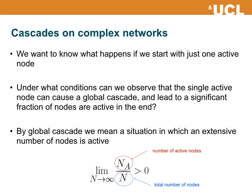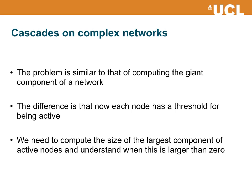By global cascade we mean a situation in which an extensive number of nodes becomes active in the thermodynamic limit. So when we consider the limit of large networks, when the number of nodes goes to infinity, we want to observe a situation where the fraction of nodes that are active is strictly larger than zero. So in the limit when N goes to infinity, the number of active nodes divided by the number of nodes must be strictly larger than zero. If this happens, we say that there is a global cascade.